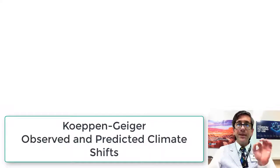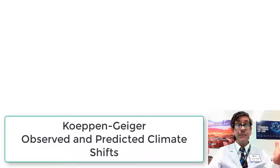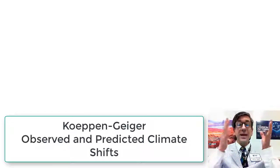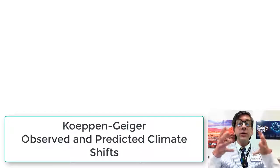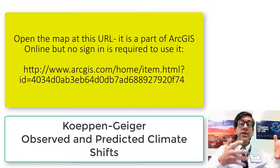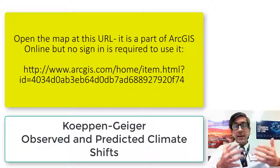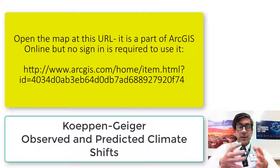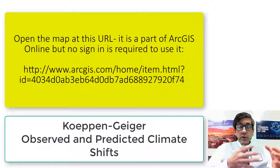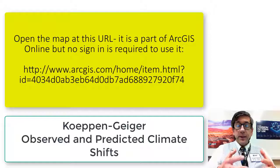It's called the Köppen-Geiger Observed and Predicted Climate Shifts Dataset — big mouthful of words. As the name implies, it's observed and predicted, and it's changed over space and time.